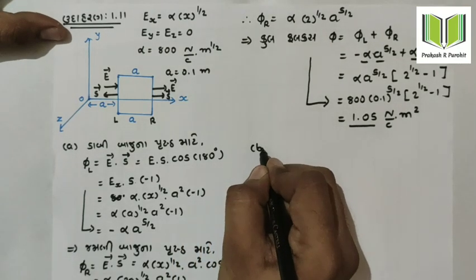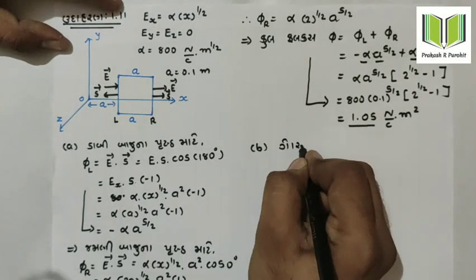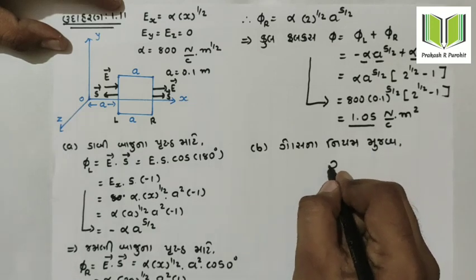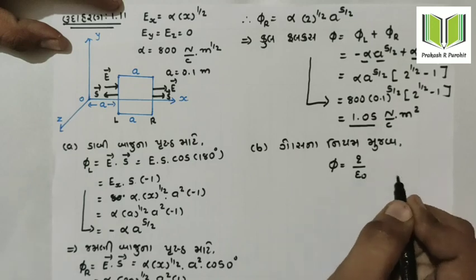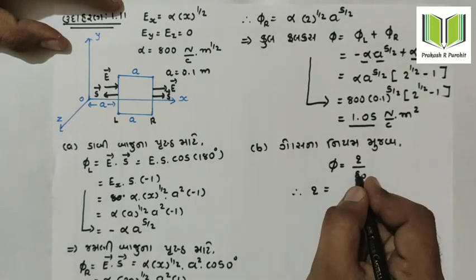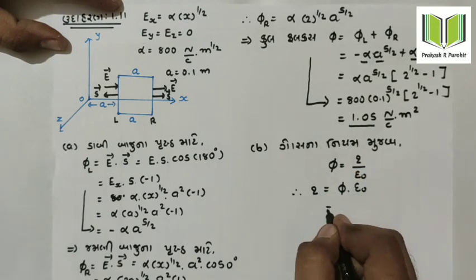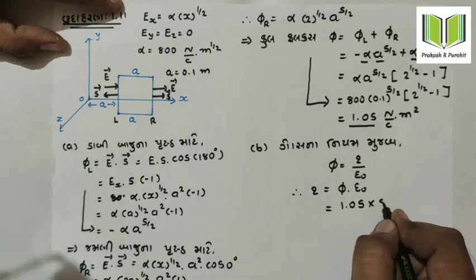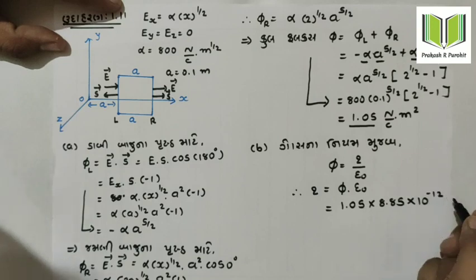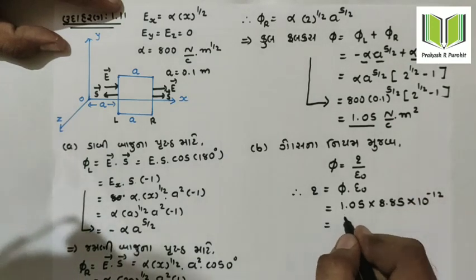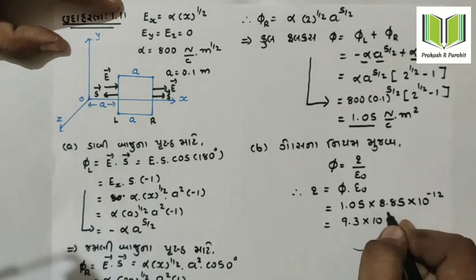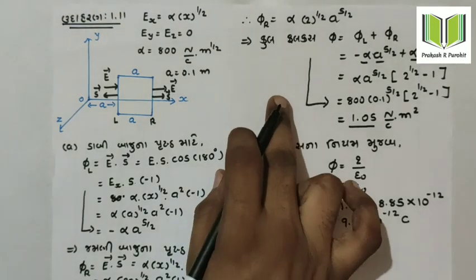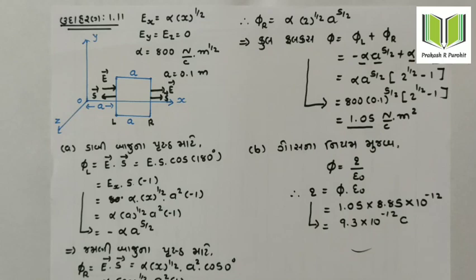The total electric charge enclosed — by Gauss's law, flux φ equals Q by epsilon-zero. So solving for Q: Q equals flux times epsilon-zero. Substituting the value of flux as 1.05 times epsilon-zero, we get the value of Q. This gives us the total charge enclosed, which is related to the total flux of the second cube as well.